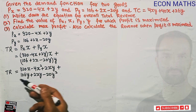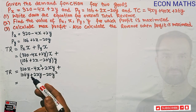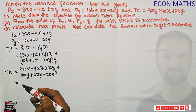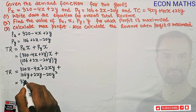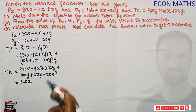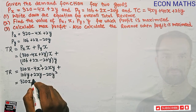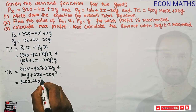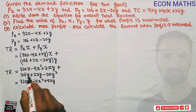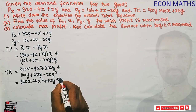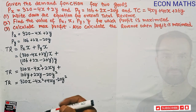Arranging the total revenue function and collecting like terms — we have 2XY and 2XY, giving 4XY — the total revenue function becomes: TR = 320X - 4X² + 4XY + 106Y - 20Y². This is the solution to the first part.